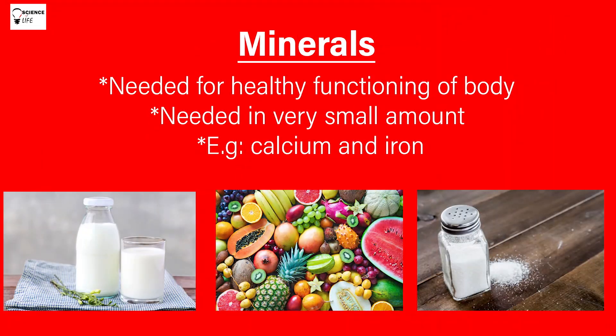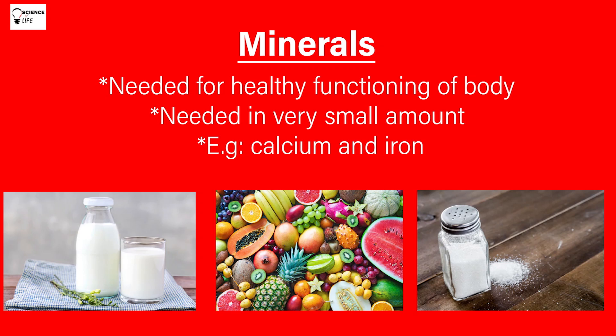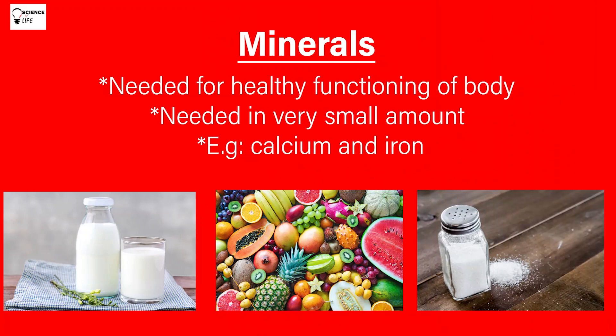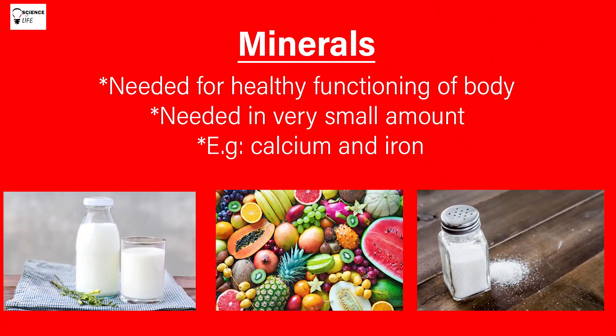The last category is minerals. Our body needs minerals in very small quantities, but they are needed for healthy functioning of our organs and organ systems. Examples include iron, iodine, calcium, phosphorus, and potassium. Calcium is needed for strong bones and teeth, and iron is needed for the formation of blood cells. Sources of minerals are milk, green leafy vegetables, and fruits.